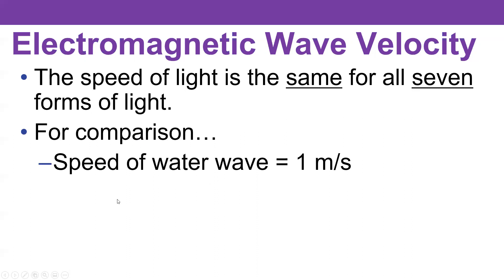We can think of a sinusoidal water wave out in the deep ocean. And if we followed the crest of a wave, we'd find out that water waves move about one meter per second. Now a meter is just a little more than a yard, so you can actually outrun a wave pretty easily — you can move faster than one meter per second.